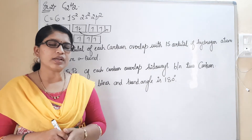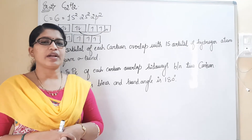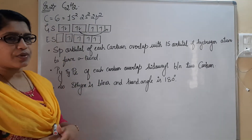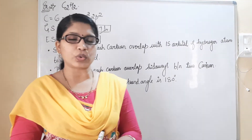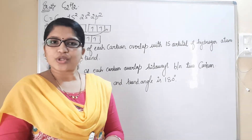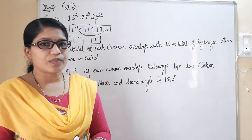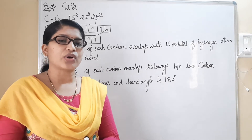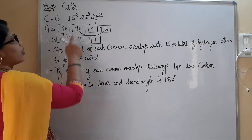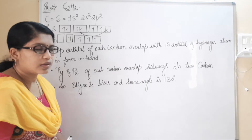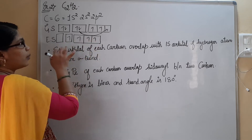Coming to the next example, ethane molecule. When you consider ethane, carbon has atomic number 6 with configuration 1s2 2s2 2p2. The 1s2 electrons are closely associated with the nucleus and cannot be easily taken away. Only the 2s electrons can participate in hybridization. When we consider 2s2 electrons, one electron is going to shift to the p orbital, giving us four unpaired electrons.